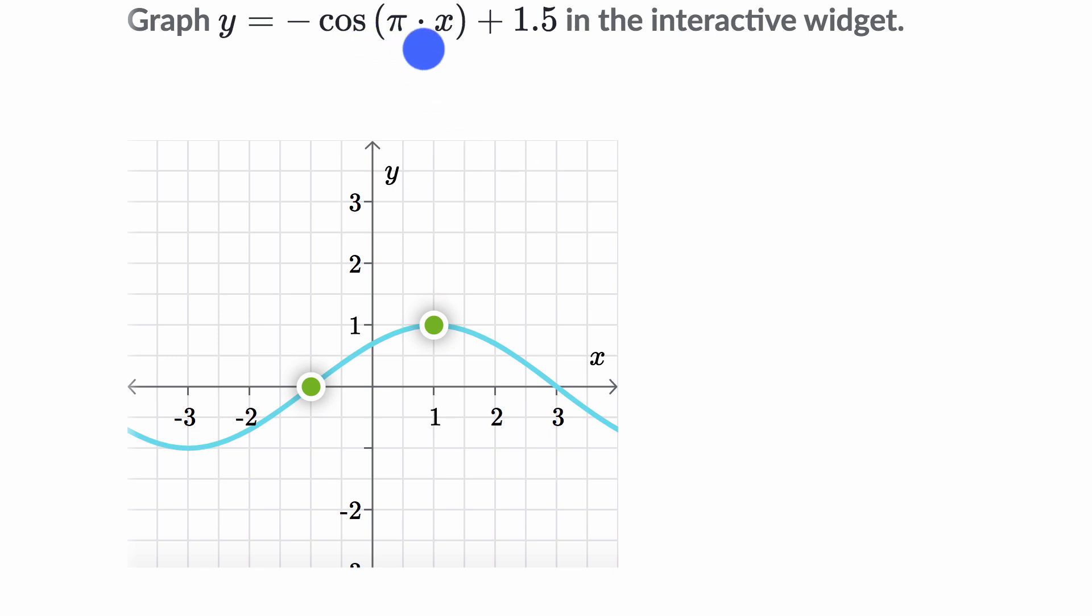So cosine of pi x, when x is equal to zero, pi times zero is just going to be zero. Cosine of zero is equal to one. And if we're just talking about cosine of pi x, that's going to be a maximum point when you hit one. Just cosine of pi x would oscillate between one and negative one.